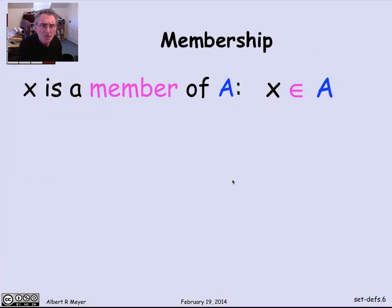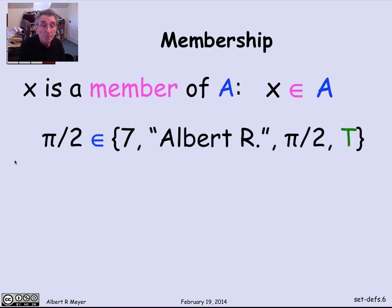So the most fundamental feature of a set is what's in it. And for that, there's a special notation. So we'll say that x is a member of A, where A is a set, and use this epsilon symbol to indicate membership. It's read x is a member of A. So for example, pi over 2 is a member of that set that we saw before that had pi over 2 in it.